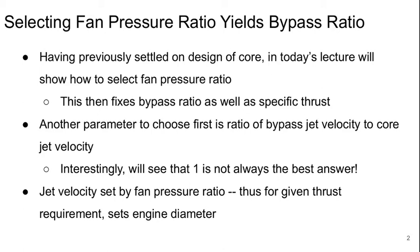Another parameter we have to choose first is the ratio of the bypass jet velocity to the core jet velocity. Interestingly, we'll see that exactly one is not always the best answer. The jet velocity is essentially set by the fan pressure ratio, so for a given thrust requirement this ends up setting the engine diameter.